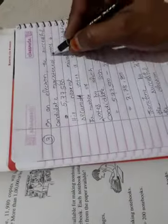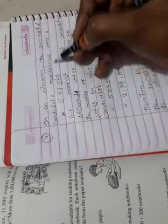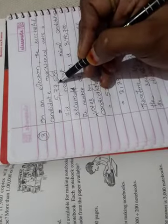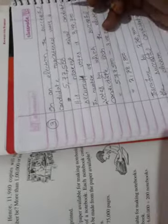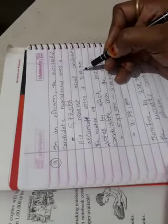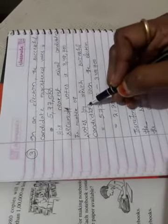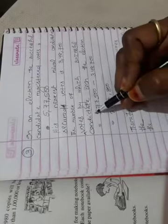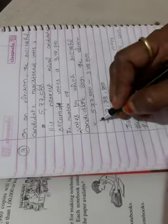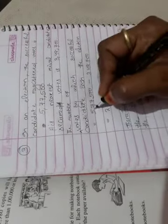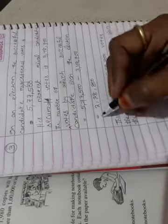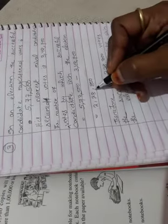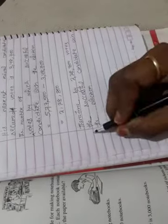Answer. In an election, the successful candidate registered votes is 5,77,500. His nearest rival candidate secured votes is 3,48,700. The number of votes by which successful candidate win the election is equal to 5,77,500 minus 3,48,700 is equal to 2,28,800.